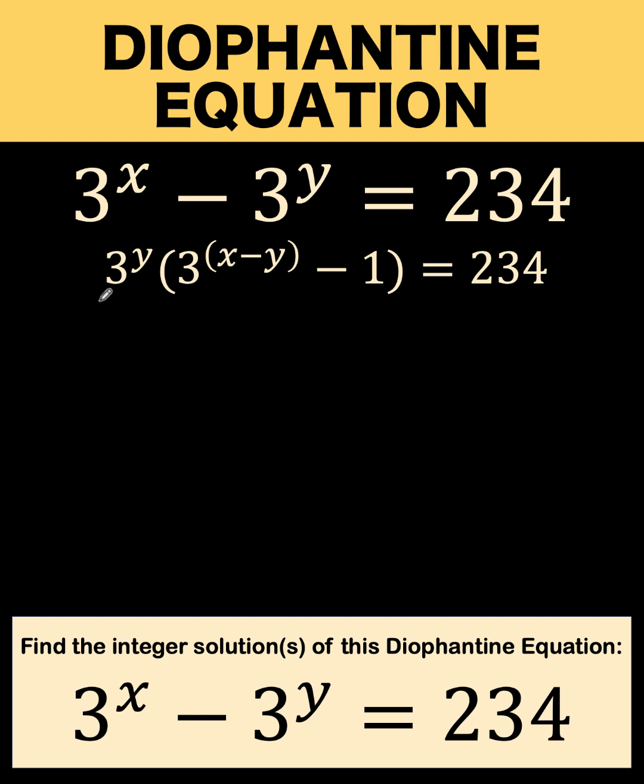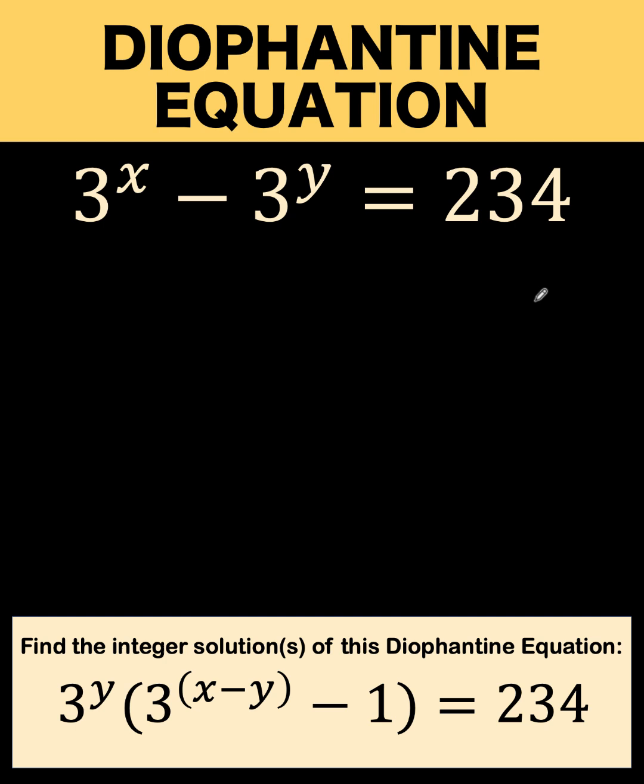we can say that this expression here is an integer. This other expression here is an integer. We have here a product of two integers expressed as product of two integers.